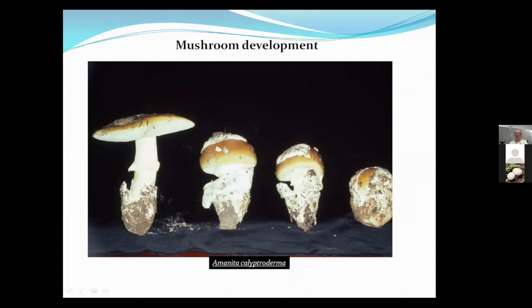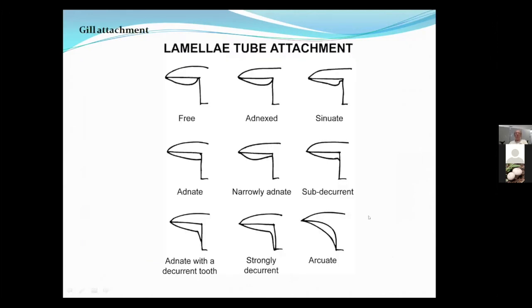Amanita calyptroderma, called the Coccora by Italians, grows on the west coast and is a really good edible — these large mushrooms grow about the size of a dinner plate, 12 inches across. One of these buttons can weigh three or four pounds, and they're really delicious.